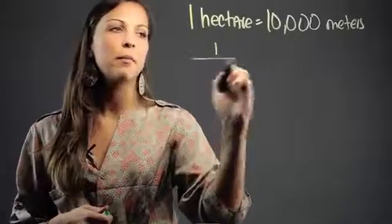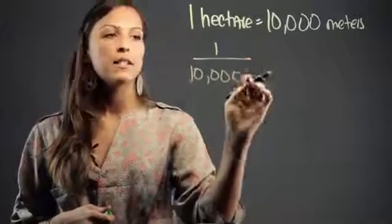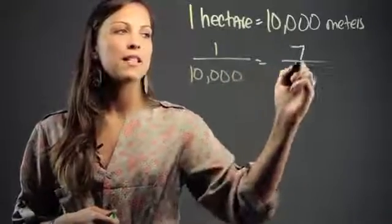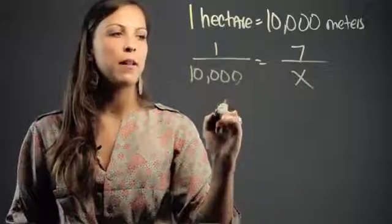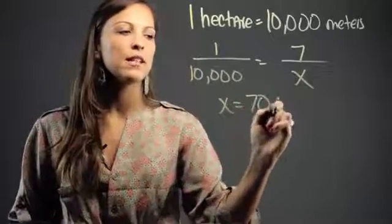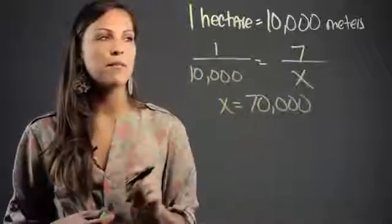We can use this ratio and we can set up a proportion or you could have just multiplied. And we say if one hectare is 10,000 meters then seven hectares are how many meters. And you go ahead and cross multiply and get x equals 70,000. So seven hectares would be equivalent to 70,000 meters.